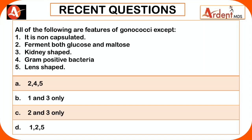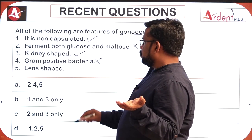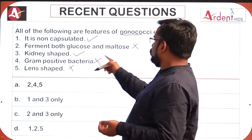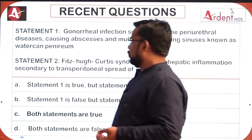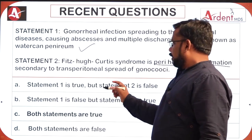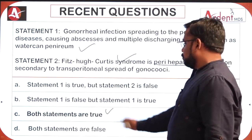All the following are features of gonococci EXCEPT: gonococci ferments both glucose and maltose — wrong, it ferments only glucose. Gram positive — wrong, it is gram negative. Lens shaped — wrong, it is kidney shaped. So statements 2, 4, and 5 are wrong. The first option is correct. Water-can perineum is caused by gonococcal periurethral discharge. Fitz-Hugh-Curtis syndrome is perihepatitis — both statements are true.